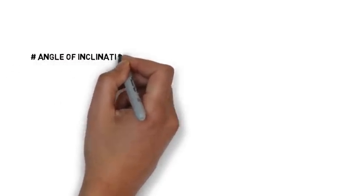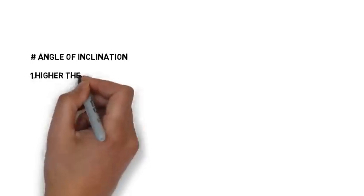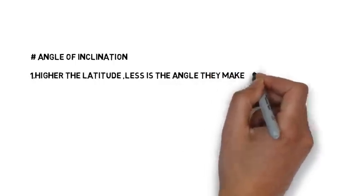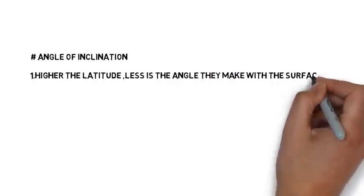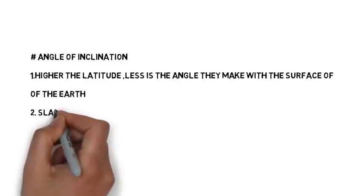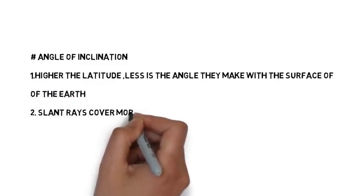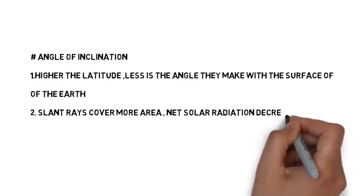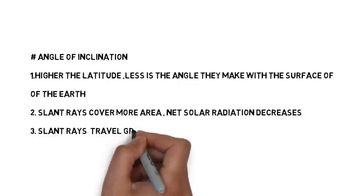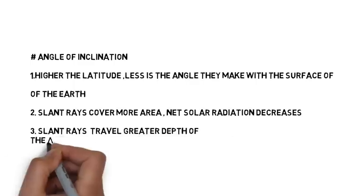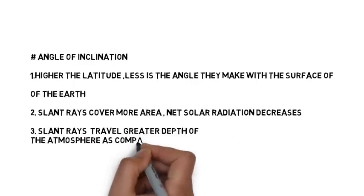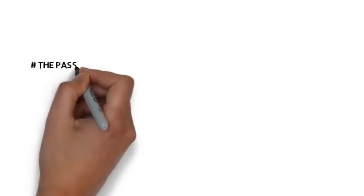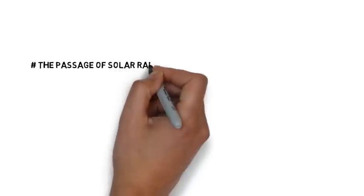The second factor, angle of inclination, also influences insolation. Higher the latitude, less is the angle that the sun's rays make with the surface of the earth. The slant rays cover more area and therefore net solar radiation decreases. When they travel more distance, they travel through a greater depth of the atmosphere, so much of the energy is absorbed, scattered, or reflected back. This is the reason that the tropical region receives maximum insolation while the polar region receives less insolation.